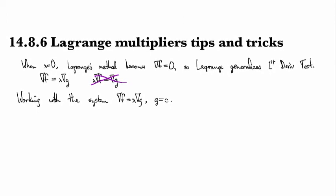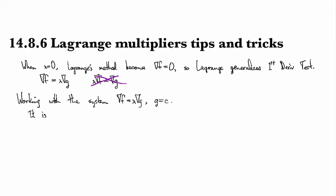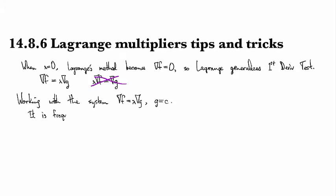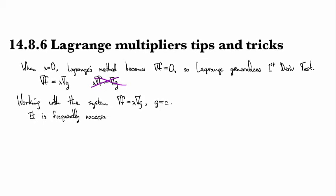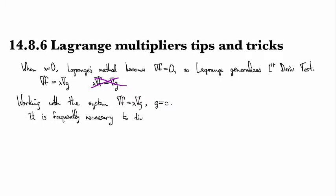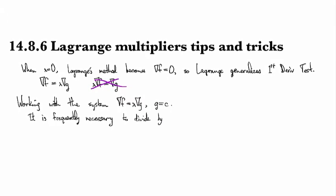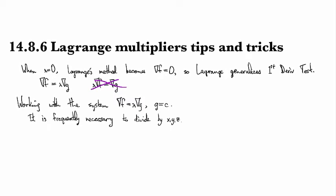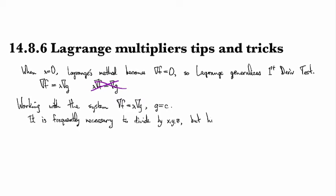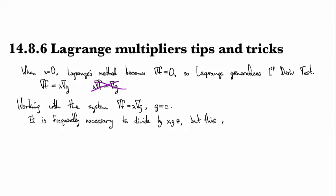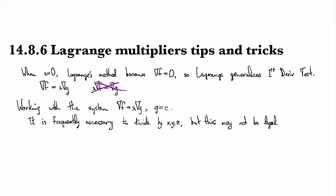Okay, so first off, I want to go back to something that I was talking about in the last clip where we looked at that example with the parabola, and it is frequently necessary to divide by one of your variables, right? When you're solving these systems, but this may, you may not be able to do this, right?